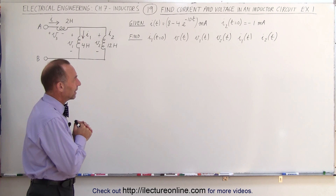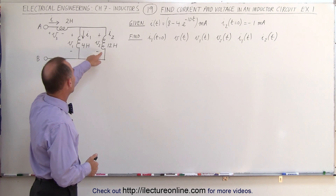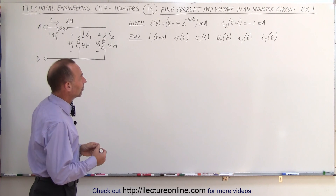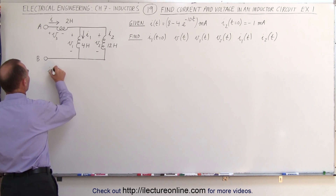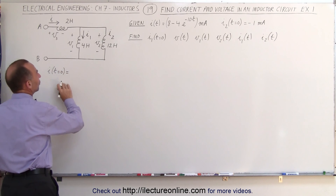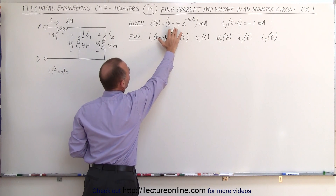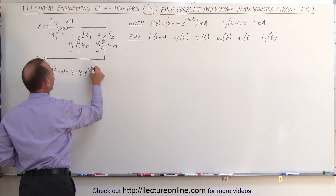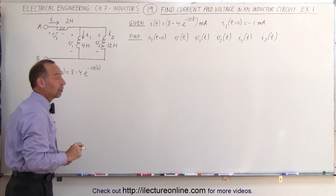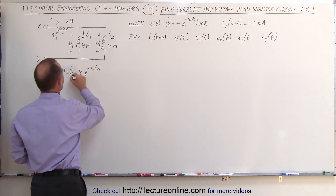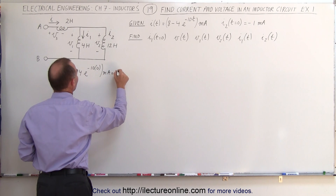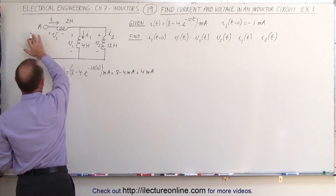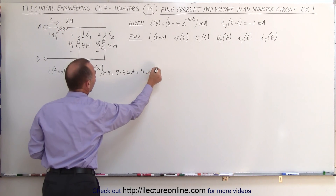Since we're given the initial condition of I2, we can find I1 and I when time equals 0. The current when t equals 0 is found by plugging 0 into the equation: 8 minus 4e to the minus 10 times 0. The exponent is 0, e to the 0 is 1, giving us 8 minus 4 milliamps, which equals 4 milliamps. So the current entering the circuit at t equals 0 is 4 milliamps.